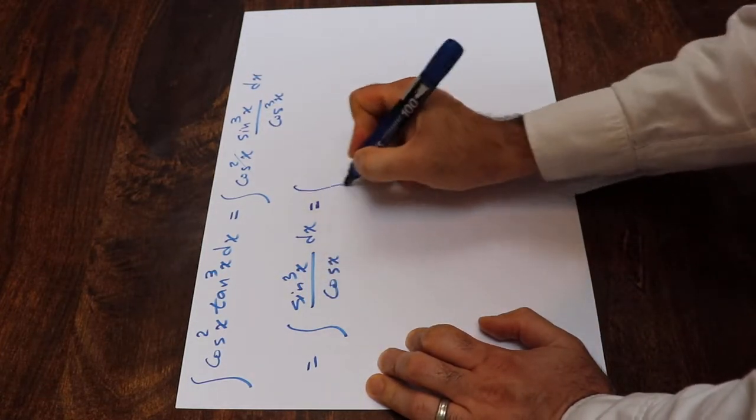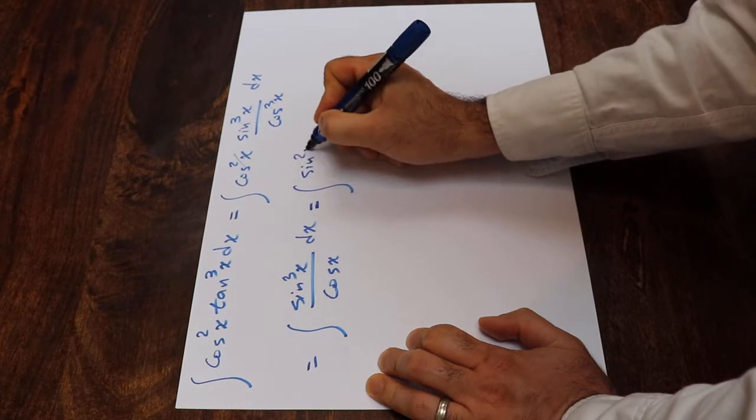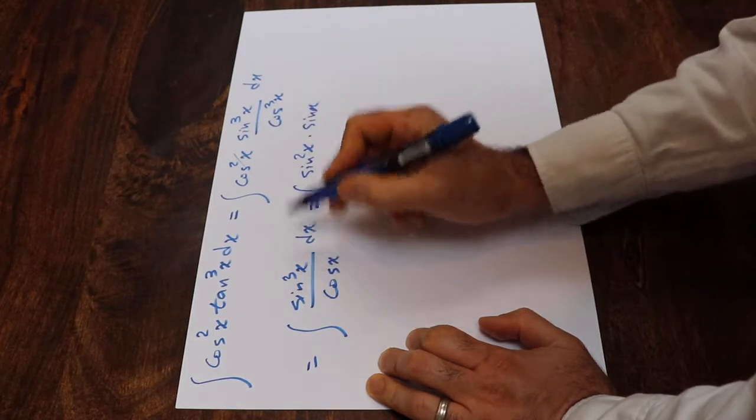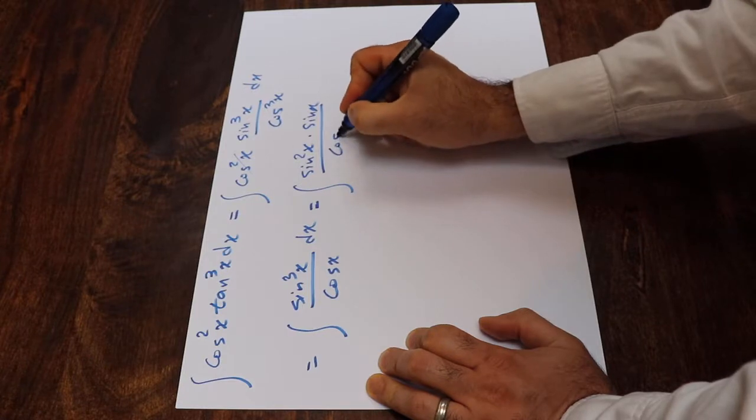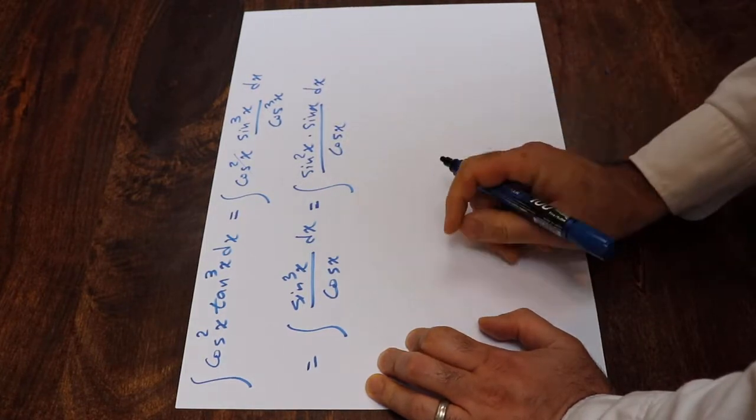So you can rewrite this integral as integral of sine square x times sine x, which will be sine 3, divided by cosine x dx.